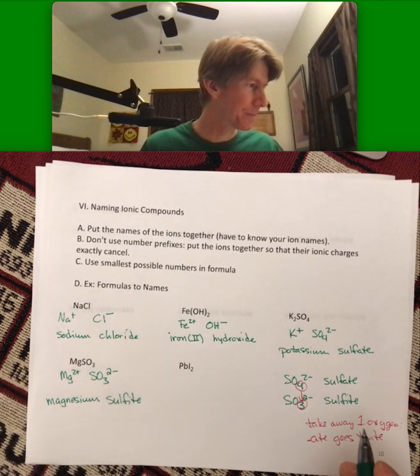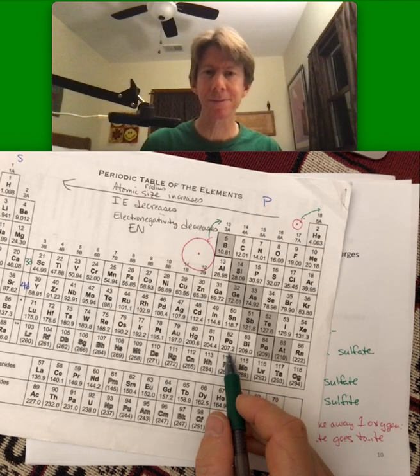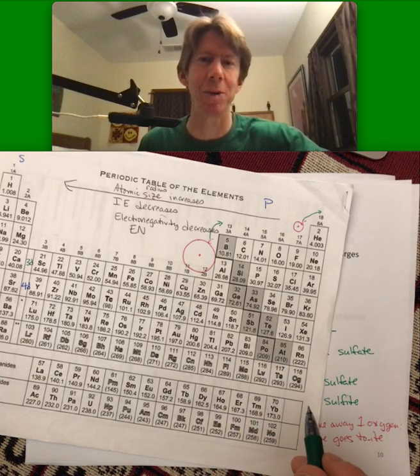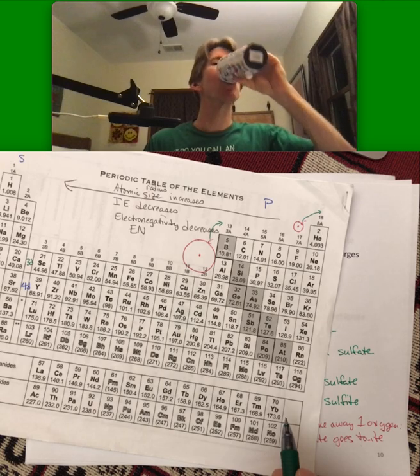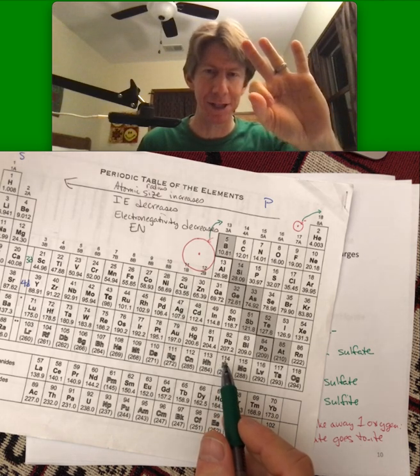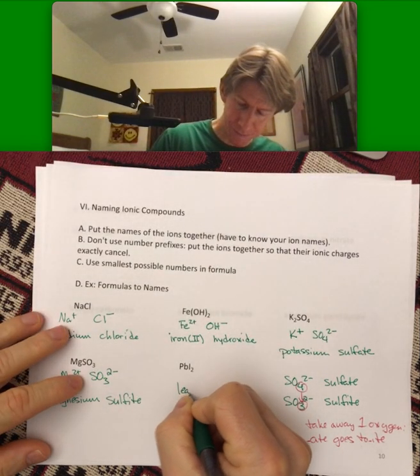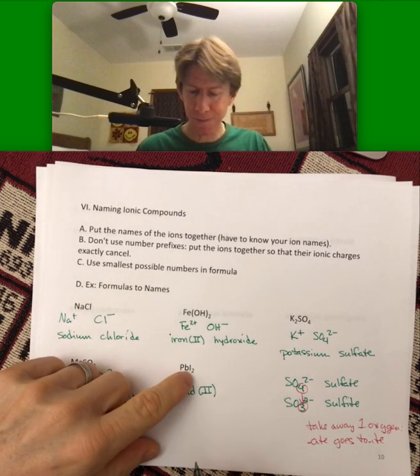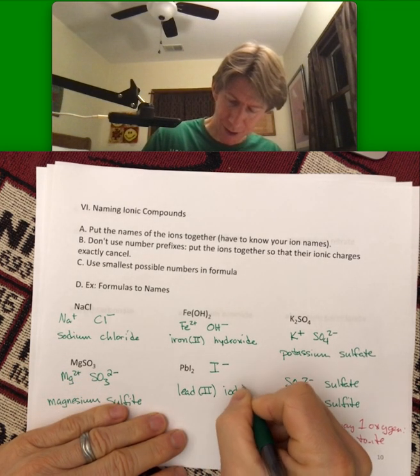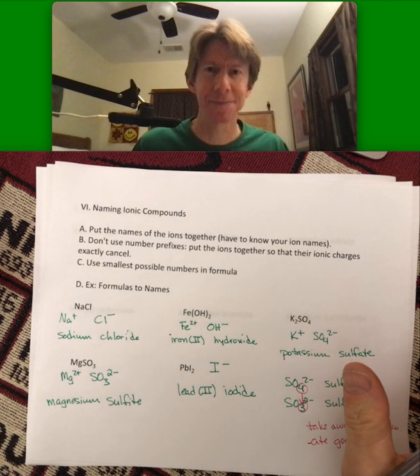PbI2. Pb, not a transition metal. It turns out that these ones down here, and the only one that's on your nomenclature list is Pb, lead, has two choices. There's Pb 2+, and there's Pb 4+. So, this is lead two. Iodide is a halogen. So, it's minus one. It's a process.